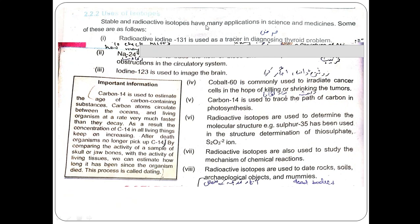Stable and radioactive isotopes have many applications in science and medicine. There are two types of isotopes: stable and radioactive. Radioactive iodine-131 is used as a tracer in diagnosing thyroid problems — it can detect swelling of the thyroid gland.